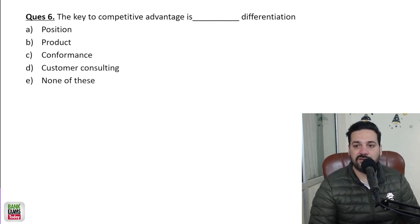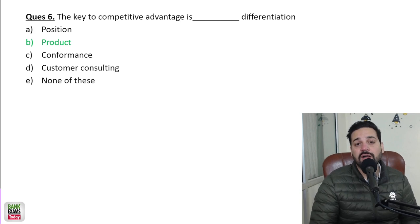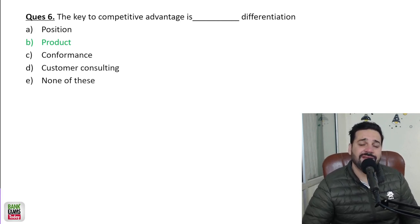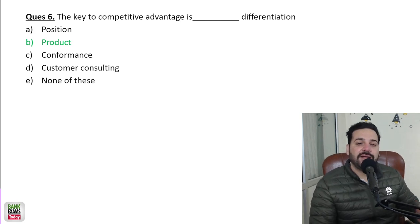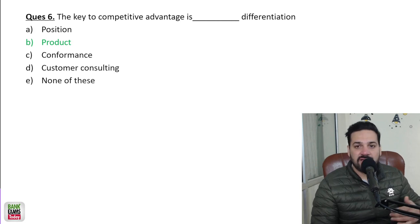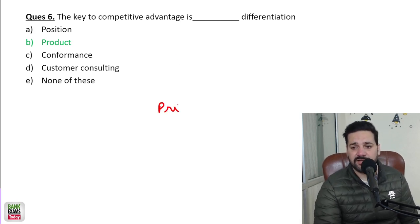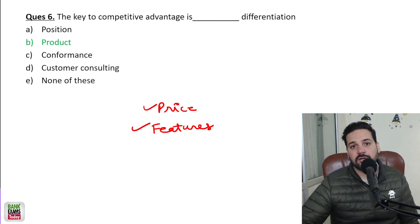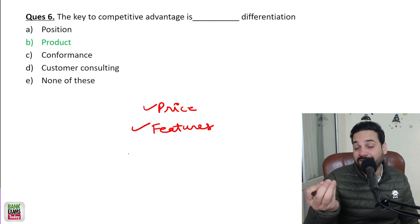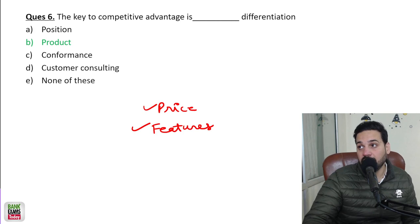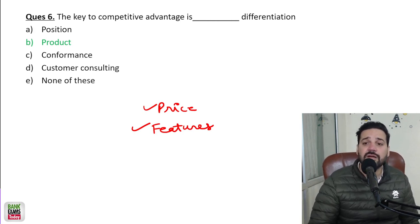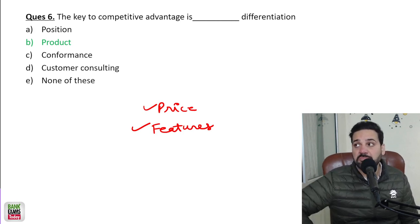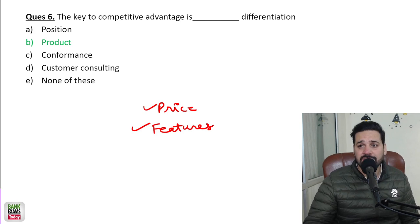The key to comparative advantage is product differentiation. If you are offering a different feature, if something is different about your product, you will have a competitive edge. Everybody is selling the same product, but your product has something different. Product differentiation can happen in any way — difference in price, additional features, features aligned to the preferences of your target customers, or really amazing quality. That is what gives you the competitive edge.